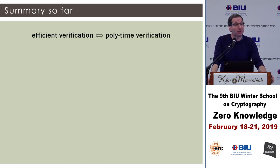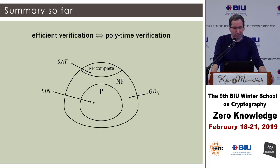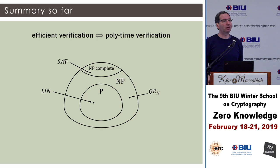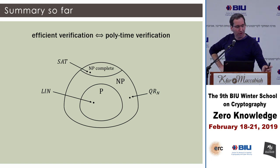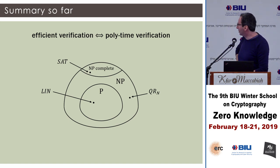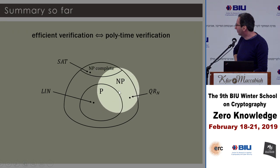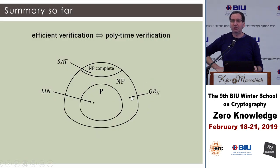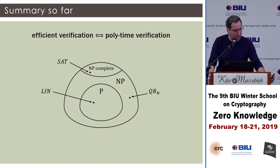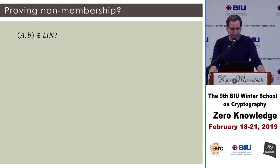To summarize what we've seen so far: efficient verification is poly-time verification. We saw three problems — linear equations, quadratic residuosity, and SAT — and where each lies in the complexity landscape. Quadratic residuosity lies somewhere between P and NP-complete. That's the only thing you need to keep in mind for now.